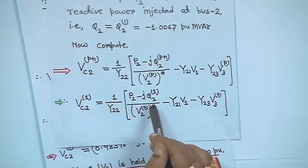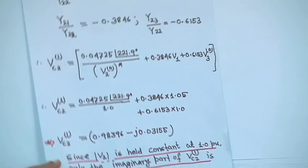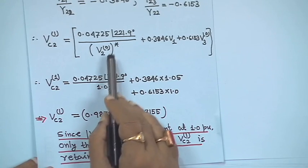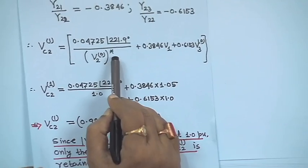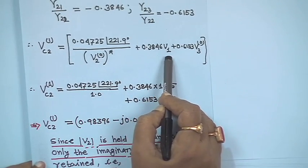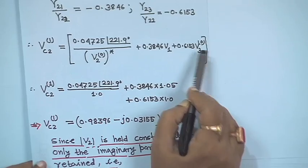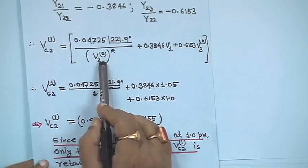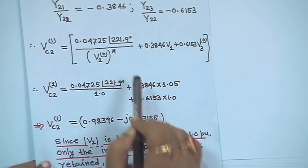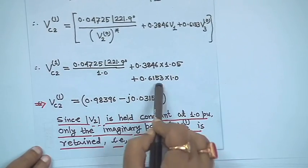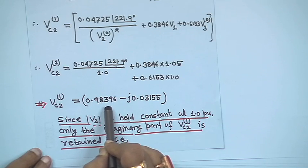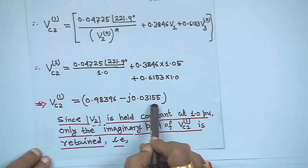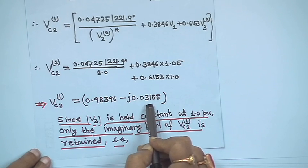Substituting all known values V₂⁰, V₁, and V₃⁰ into the equation for V_C2¹ gives: V_C2¹ = 0.98396 − j0.03155. If you take its magnitude, it is never equal to 1. But we need to make it 1 for the PV bus consideration in the Gauss-Seidel method.